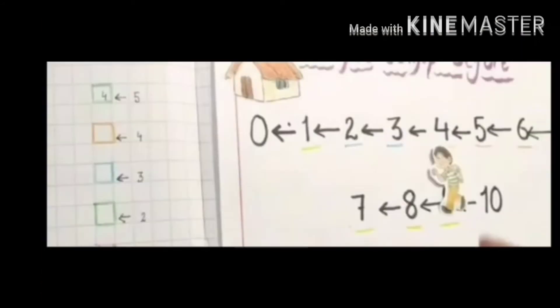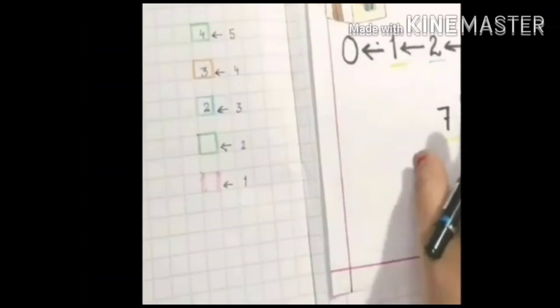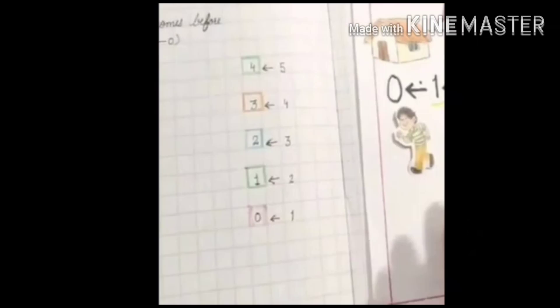What comes before 4? It's 3. What comes before 3? It's 2. What comes before 2? It's 1. What comes before 1? It's 0.